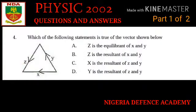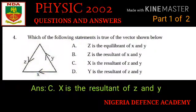Question number four: which of the following statements is true of the vector shown below? Option A: Z is the equilibrium of X and Y. Option B: Z is the resultant of X and Y. Option C: X is the resultant of Z and Y. Option D: Y is the resultant of Z and Y. The right answer is option C — X is the resultant of Z and Y.